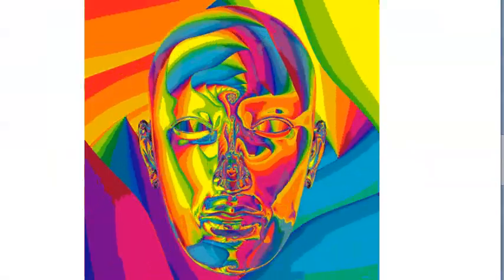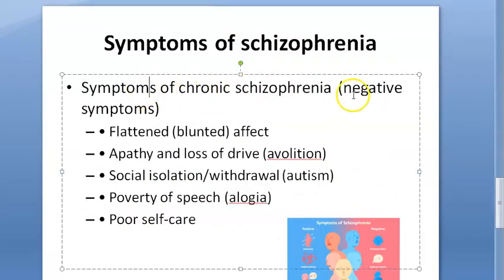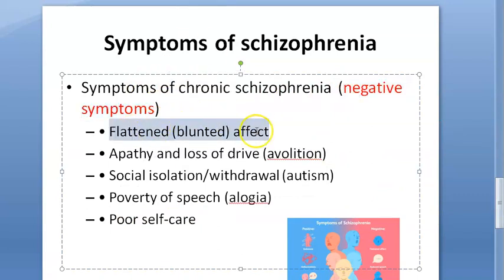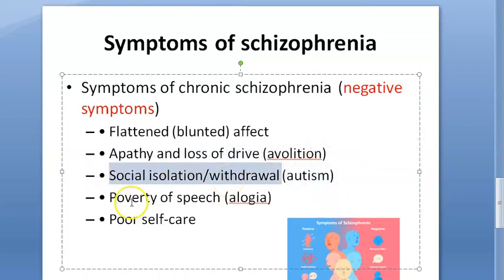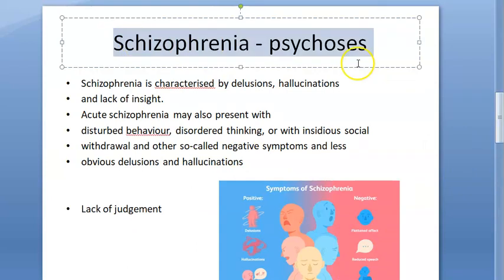Now looking at the negative symptoms - these mean there is something less. They include blunted or flattened affect, apathy, loss of drive - that is called avolition. Also autism, social isolation or withdrawal, poverty of speech - called alogia - and poor self-care.